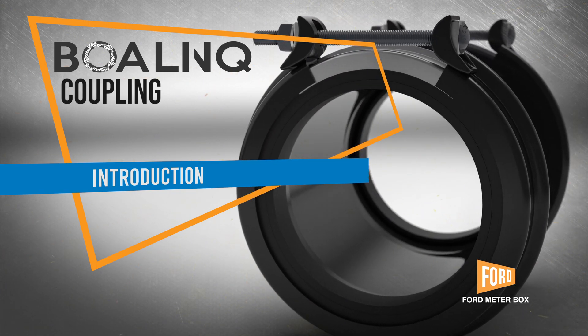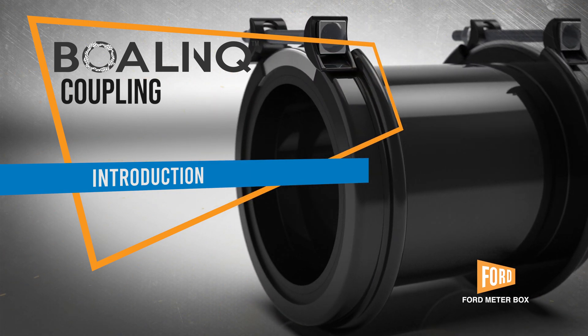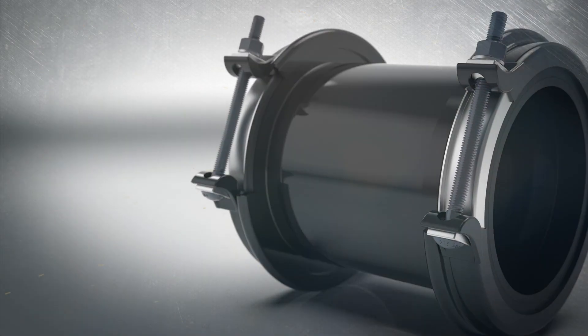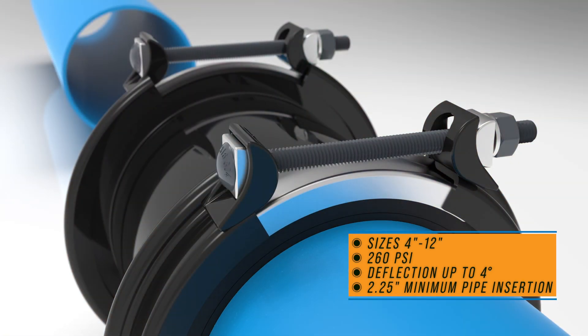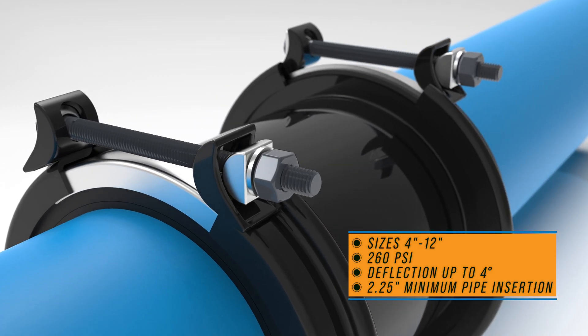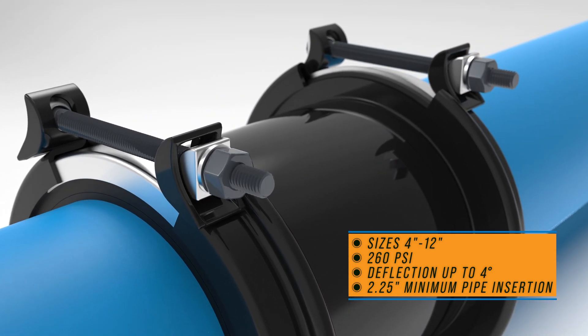We designed the new BOA-Link Coupling at Ford Meterbox to make life easier for our customers. The BOA-Link Coupling is a lightweight option to quickly connect most kinds of straight-in pipe when restraint isn't needed.